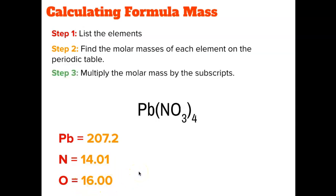The next thing I'm going to do is multiply the molar masses by the subscripts, meaning how many of each atom we have. If I take a look, lead doesn't have a number by it so that would be a subscript of 1. Nitrogen has a subscript of 1 and then it also has the 4 outside of the parentheses, so we'd be multiplying nitrogen by 4. Oxygen has a subscript of 3 and it has a subscript of 4 out here.